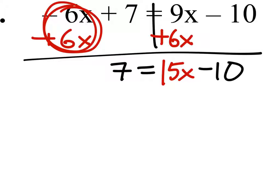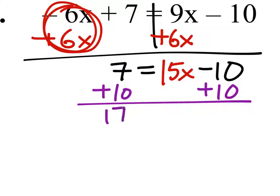Next, we've got that minus 10, which we can't have being subtracted from the x. So we'll have to add 10 to both sides. That gives us 17 equals 15x.